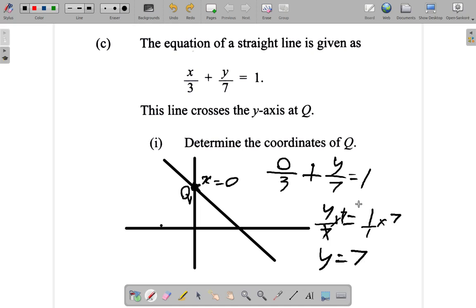So the coordinates of Q are where x is 0, y is 7. So we can write it down like this: 0, 7. So 0, 7 would be the coordinates of Q.